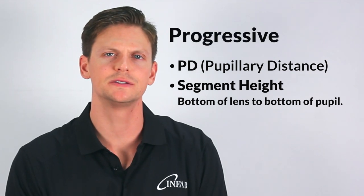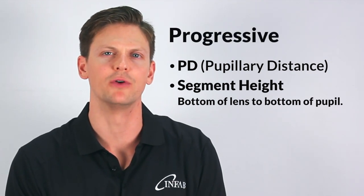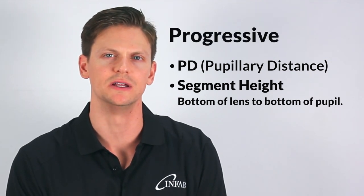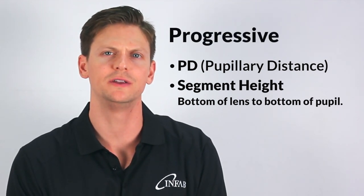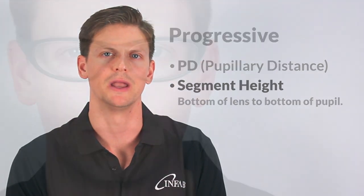For progressive lenses, the same measurements as a bifocal lens are needed: pupillary distance or PD, and segment height.